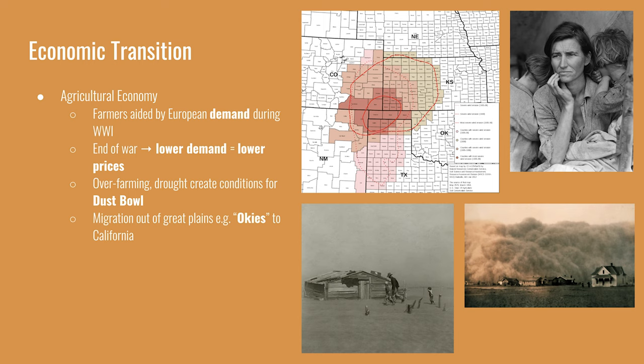Okies were people from Oklahoma who had to move because farming was no longer profitable, or they had lost their farm due to inability to pay debts. The Okie migration started in the 1930s when farming conditions, compounded with the Great Depression, forced millions to move. The most recognizable image from this migration is a photograph taken by Dorothea Lange, showing a mother caring for her children on their way to California.